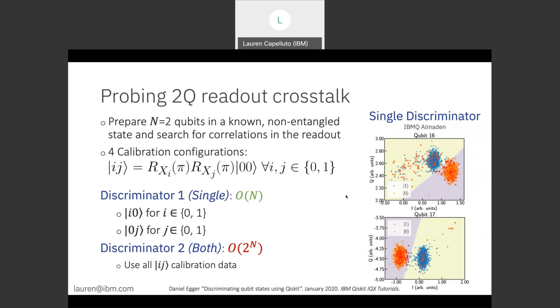Then using this data, we build two discriminators. One is going to use a subset of the data. So qubit 16 will be discriminated while qubit 17 will be held in the ground state and vice versa. Discriminator two is using all four calibration setups. So we'd expect that discriminator two will perform better if there's readout crosstalk, because perhaps the state of qubit 16 in the ground state will shift a bit depending on the state of qubit 17.